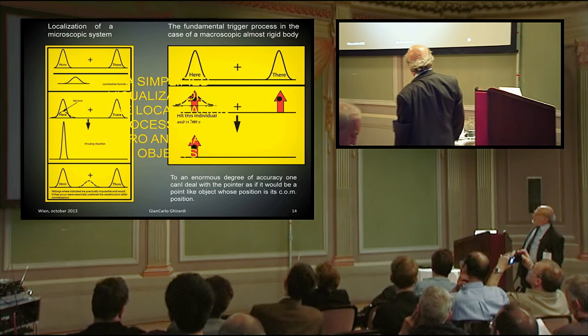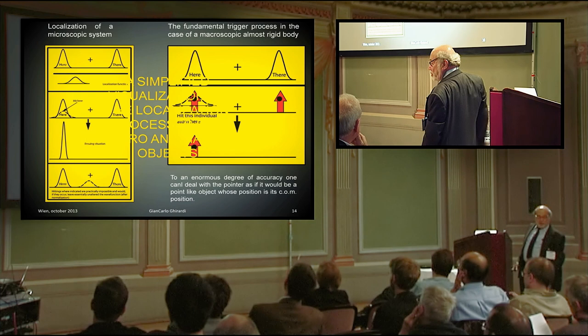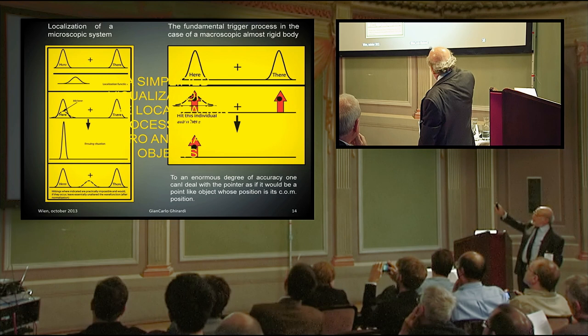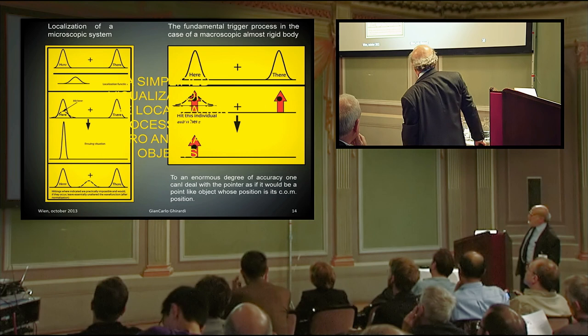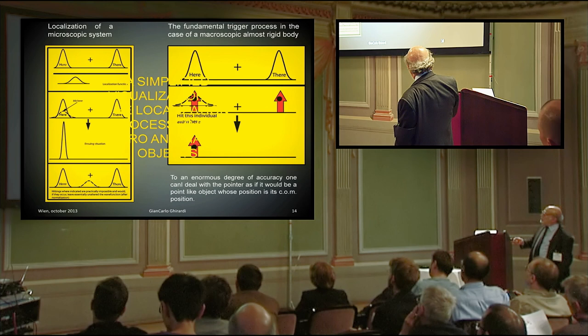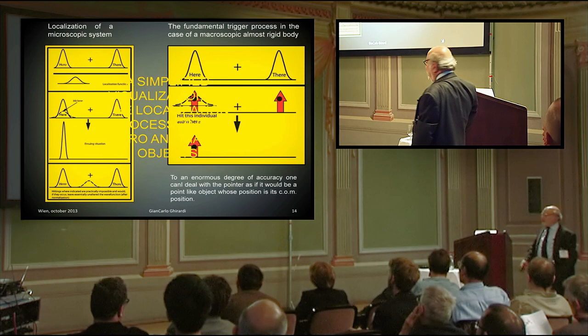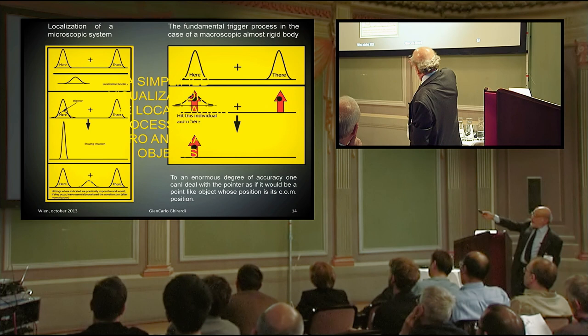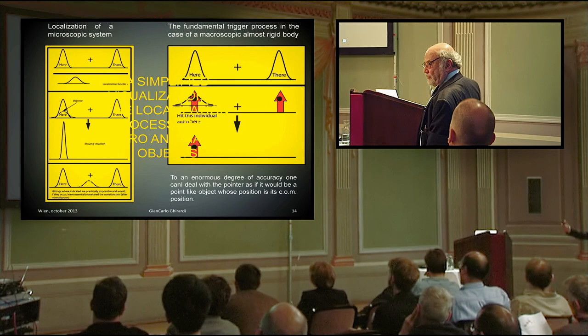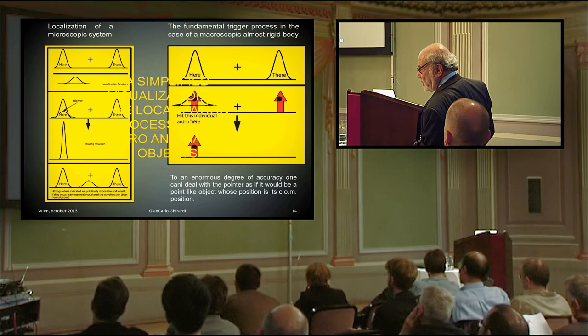I will just give a very simplified view of the localization process for micro and macro objects. You see there I have a microscopic object which is in a superposition of two Gaussians here and there. The other Gaussian that I have drawn is my localization function. If a localization occurs at that point, multiplying that Gaussian times the Gaussian which is there, you get zero, so you localize the particle, then you normalize the state, and you get the particle which is localized in that region. Obviously, localization out of the region in which the wave function is appreciably different from zero has probability zero of occurrence because the probability is related to the norm after you have applied the localization.